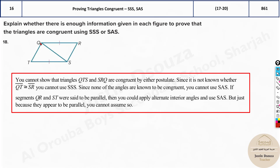If segments QS and ST were parallel, then you could use alternate interior angles and similar reasoning. They look parallel, but it has not been stated. If they were parallel, we could have said these angles are congruent to each other. But here, there is not enough information.